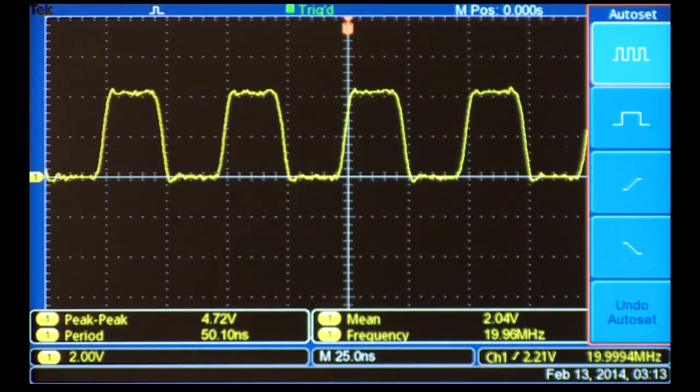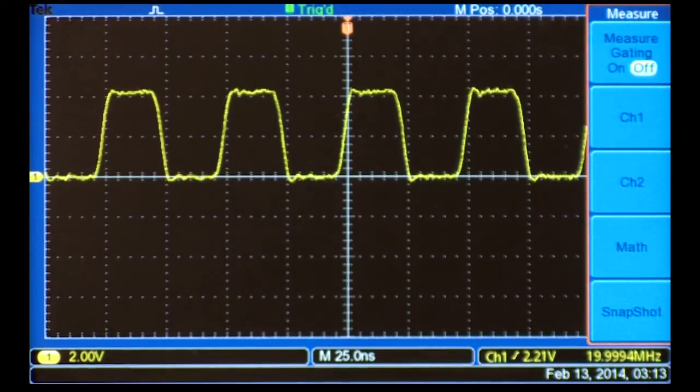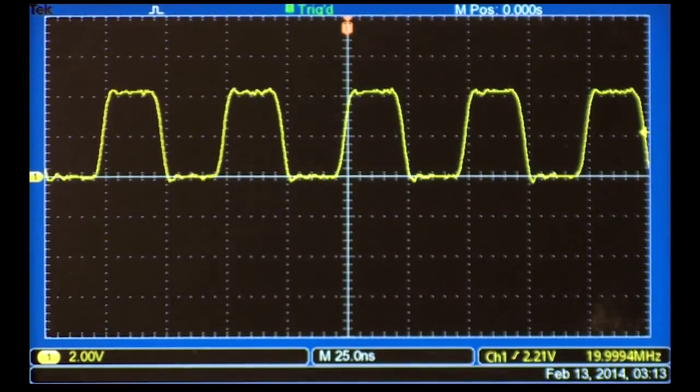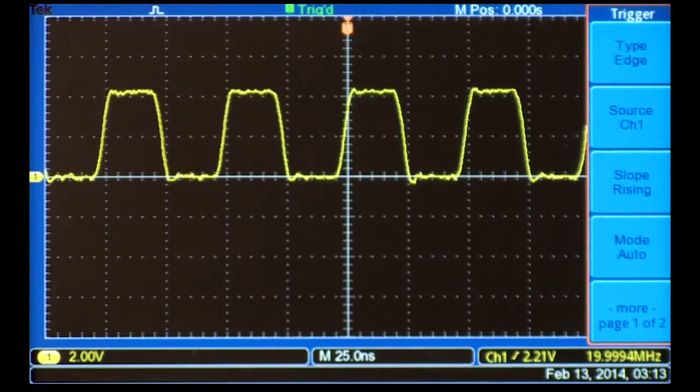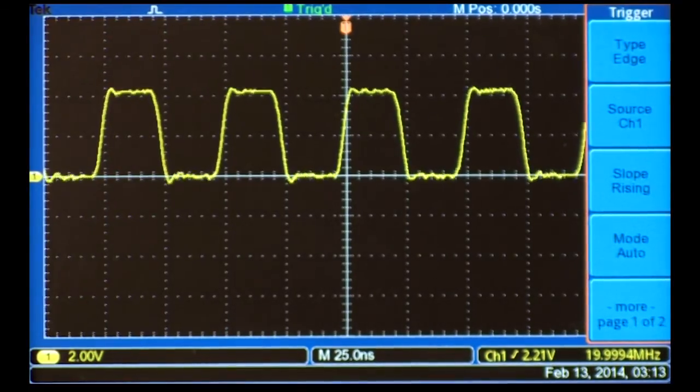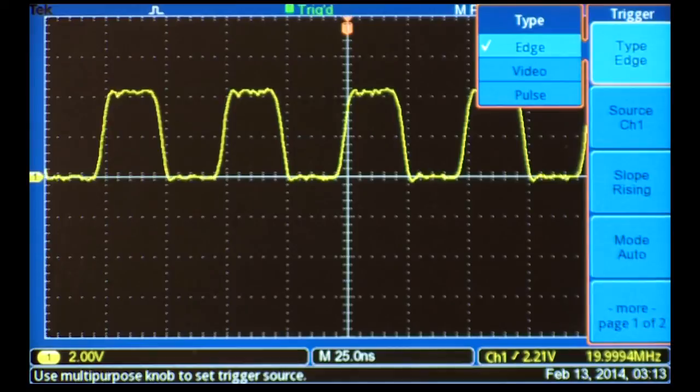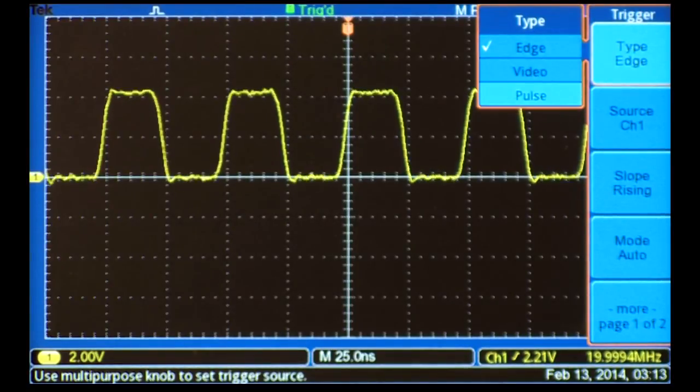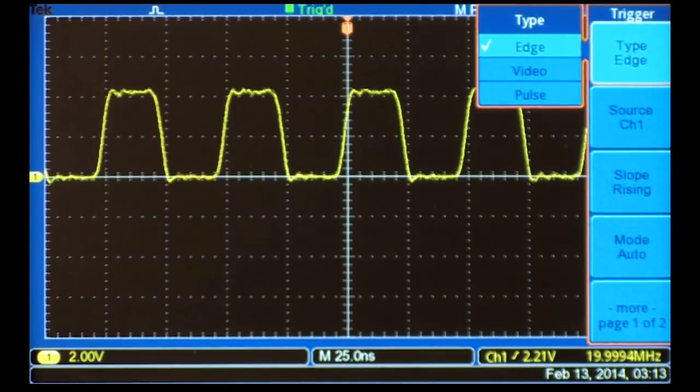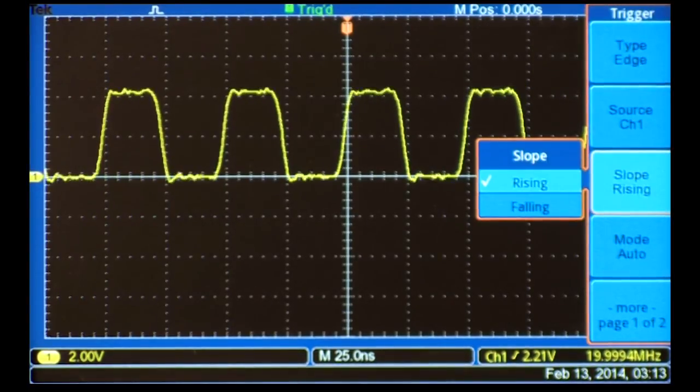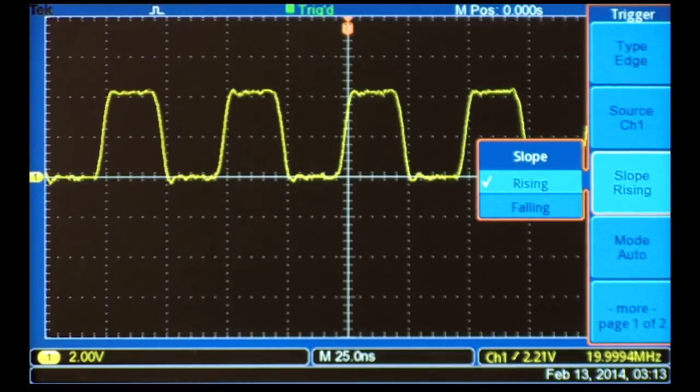The Auto-Set function has automatically configured the trigger. Let's take this opportunity to review the trigger controls. In addition to edge triggering, the TBS-1000B also has pulse and video triggering options. We'll talk about pulse triggering a little later. The slope control is set so that the scope triggers when the signal is going from low to high, that is, a rising slope.